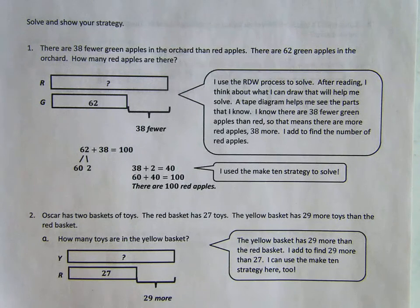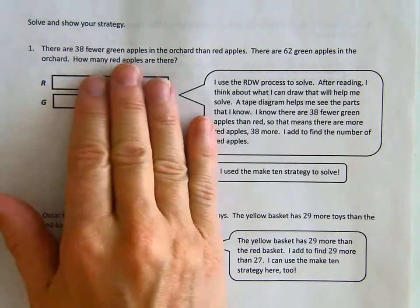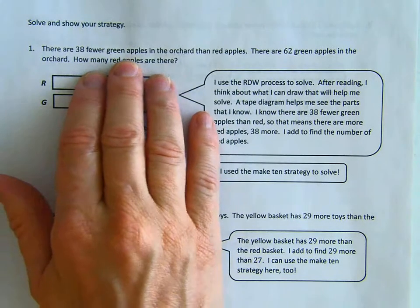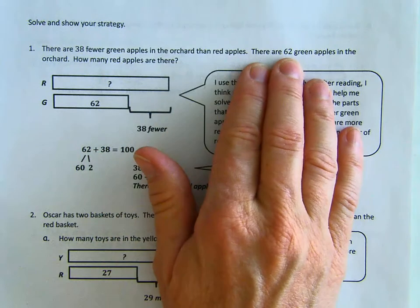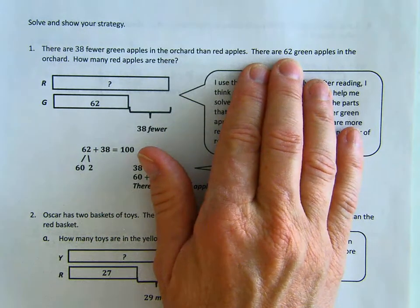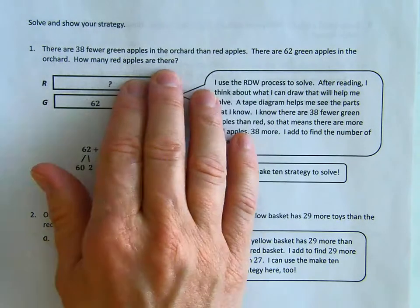We will continue to use RDW: read, draw, and write. There are 38 fewer green apples in the orchard than red apples. There are 62 green apples in the orchard. How many red apples are there?